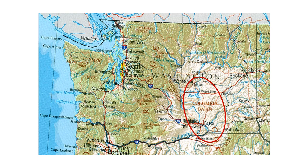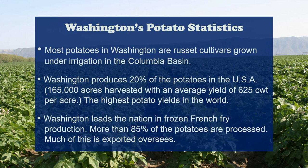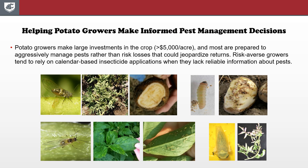I work in the Columbia Basin in central Washington, where 95% of Washington's potato crop is grown. Potatoes are a very important crop for Washington. Our growers produce more than 20% of the U.S. potato crop, which is a close second to Idaho's 25%. We have a very long growing season in central Washington — about 150 to 200 days — and Washington's potato growers can boast of having the highest potato yields in the world. More than 85% of potatoes in Washington are processed, meaning a lot of potatoes are grown under contract with processing companies that have very strict yield and quality expectations. It takes a lot of money to grow potatoes, and the profit margins are modest even for a perfect crop.